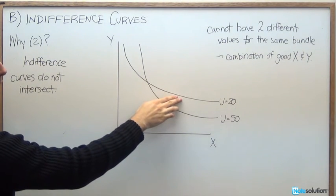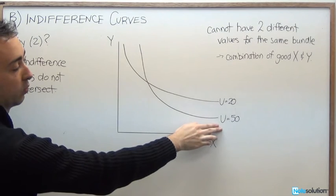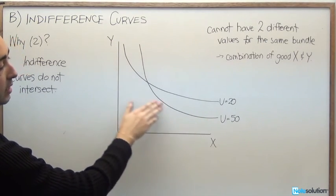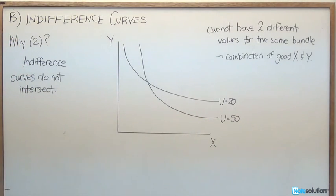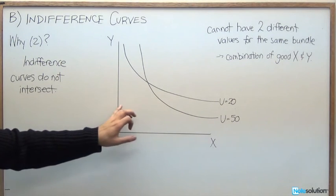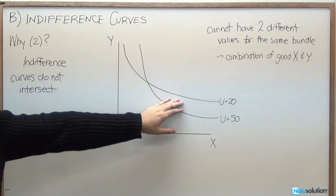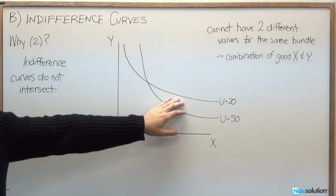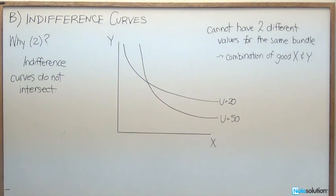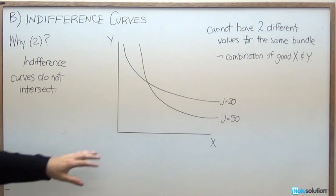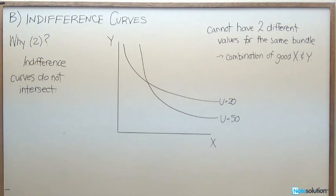The utility value of that higher point has to be greater than the one we had before. But we can see here that the way we've drawn the indifference curves, that at this lower point, we had a utility of 50. And that by having more, we've now actually decreased our utility. That's going to be a contradiction. So we've now found another reason why this graph here is a bad indifference curve diagram.